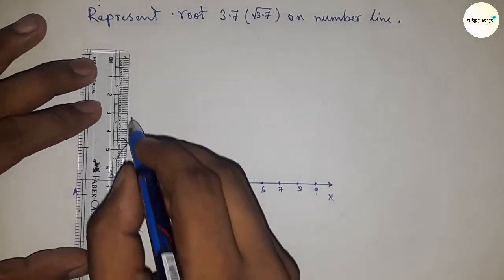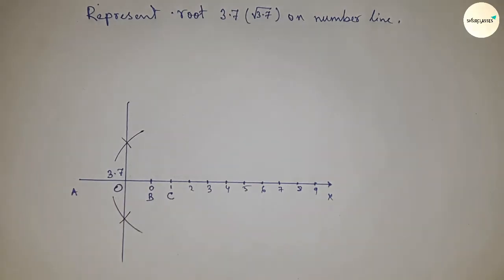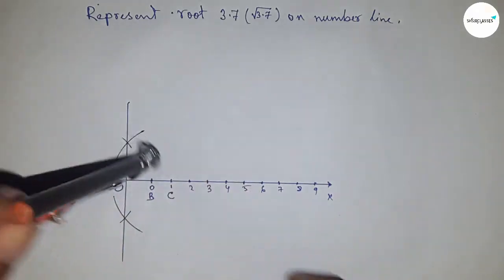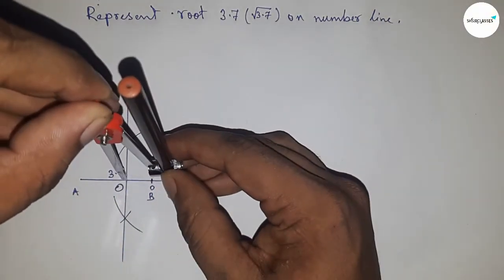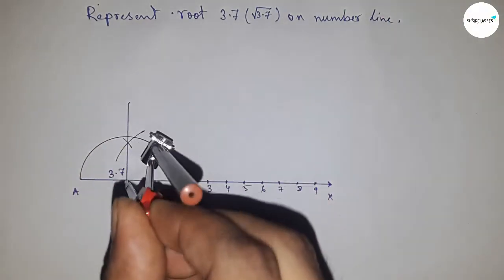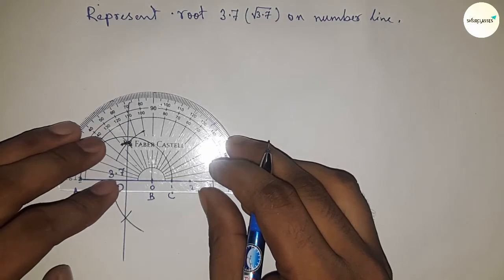Next, taking the distance OA and OC to draw a semi-circle through the point A and C. So now constructing 90 degree angle on the point B.